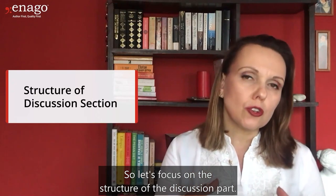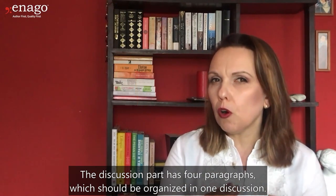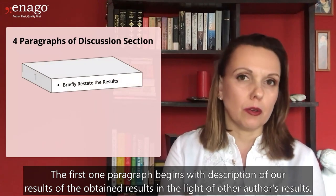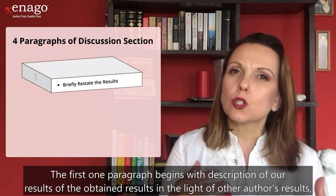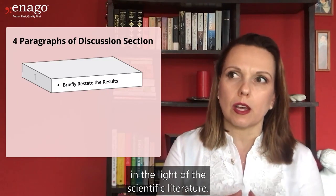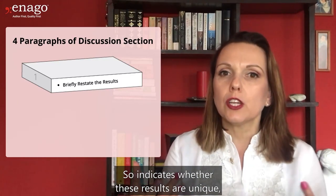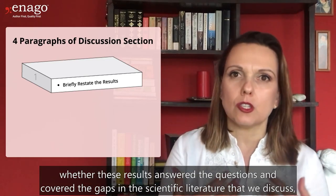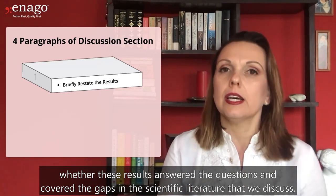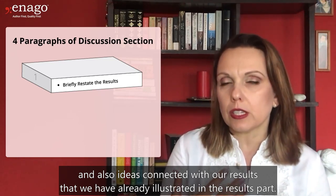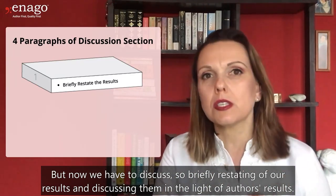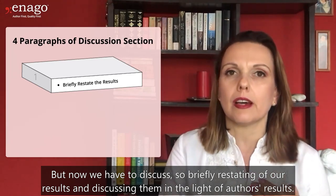The discussion part has four paragraphs organized into one discussion section. The first paragraph begins with a description of the obtained results in the light of other authors' results and the scientific literature. It indicates whether these results are unique, whether they answer the questions and cover the gaps in the scientific literature, and it is connected with the results already illustrated in the results section — briefly restating and discussing them in the light of other authors' results.